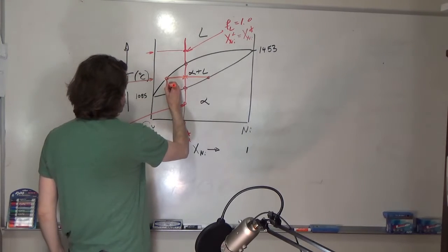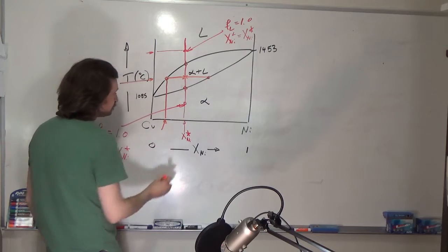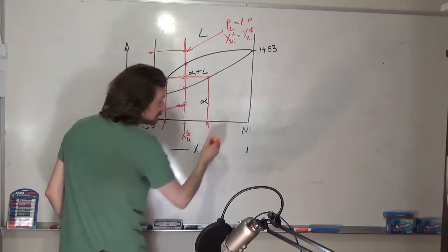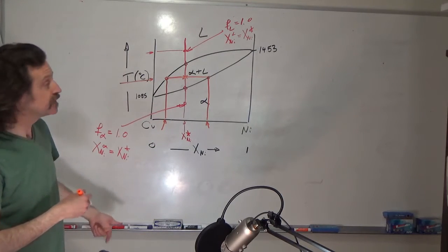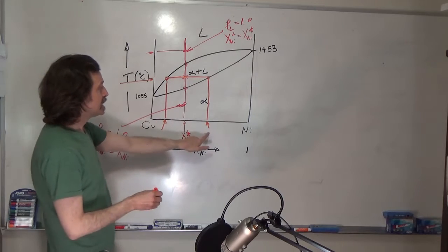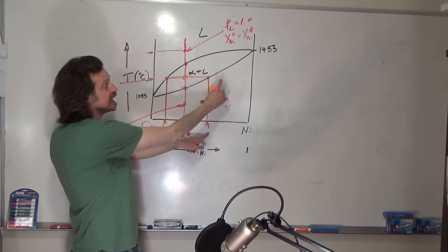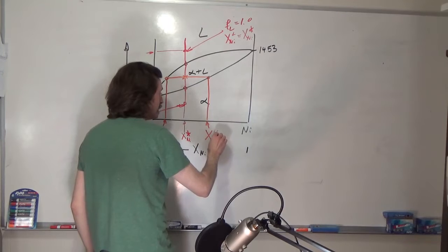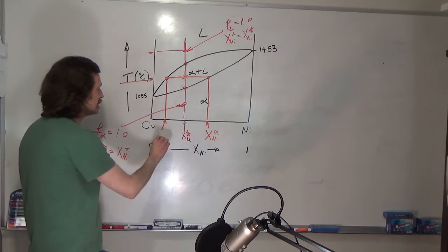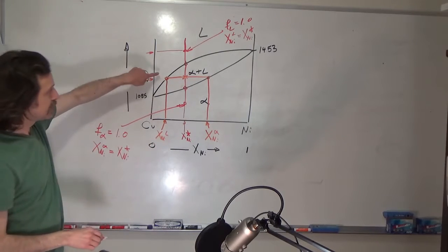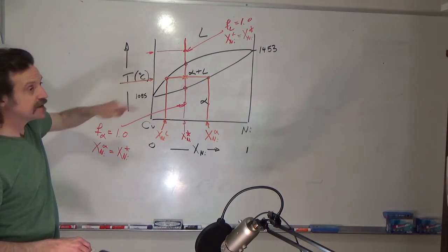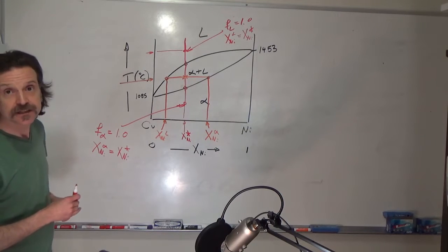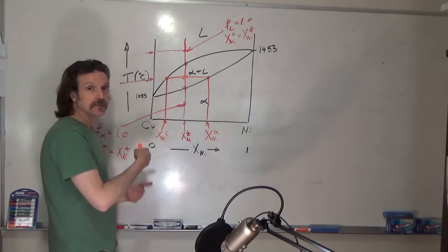From those horizontal lines, because we know those are the solubility limits, they tell us the composition of the phases. Alpha and liquid phases are present. The point where the two-phase region touches the pure alpha phase gives us x_Ni^alpha — the composition of the alpha. The other intersection gives x_Ni^L, the solubility of nickel in the liquid.